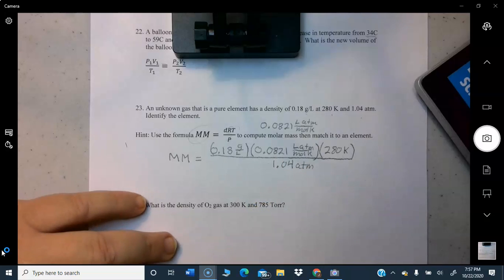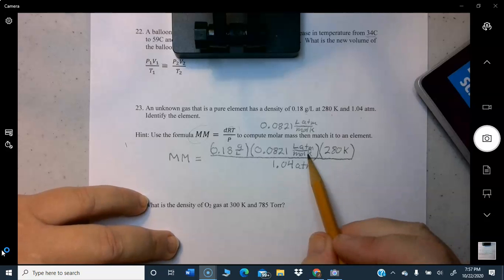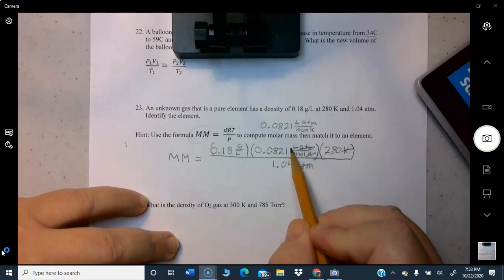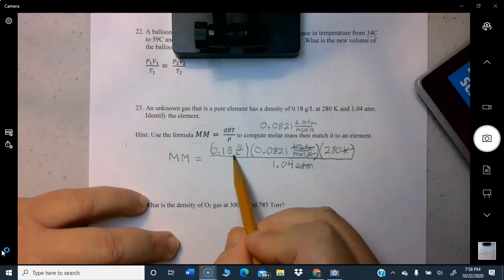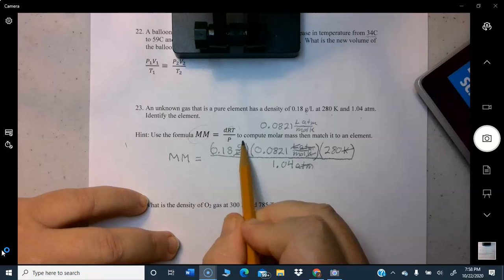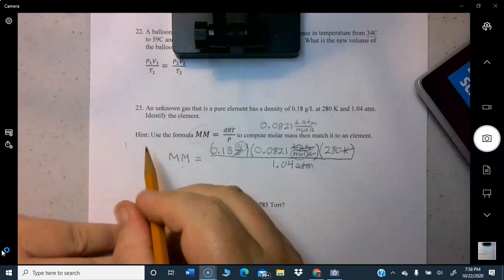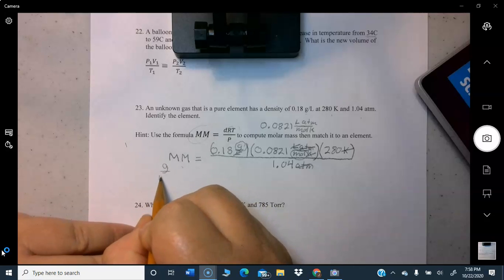Let's go ahead and cancel units. Atmosphere numerator top cancels with atmosphere denominator bottom. Kelvin numerator top cancels with kelvin numerator bottom. Liters numerator top cancels with liters numerator bottom, and it looks like we've canceled everything except grams over moles numerator top over numerator bottom.